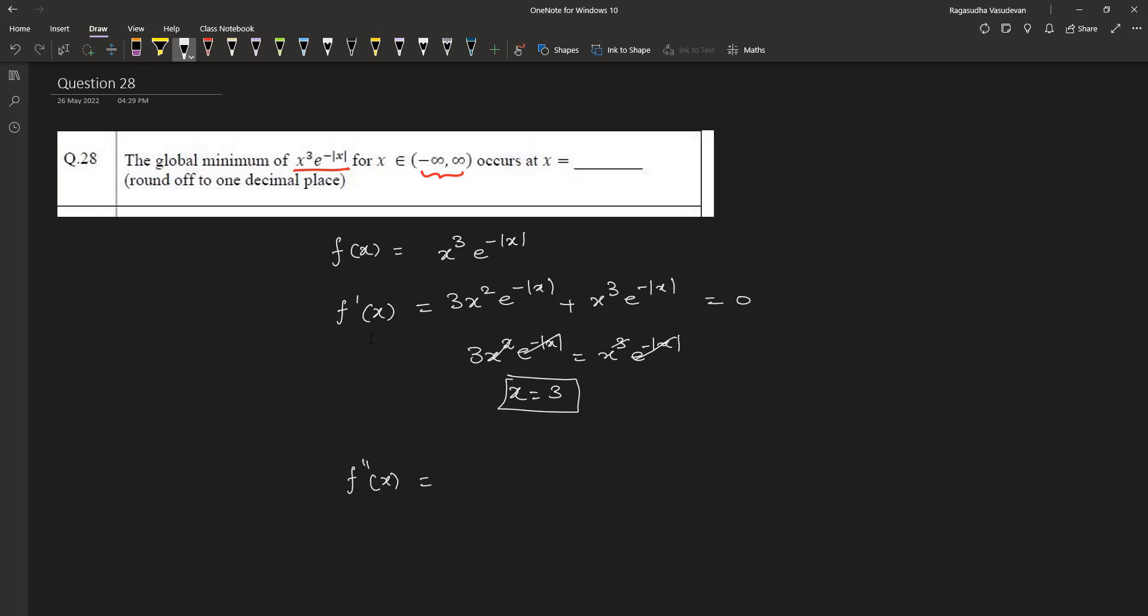The second derivative of this function is equal to 6x e to the power minus mod x plus 3x square e to the power minus mod x plus 3x square e to the power minus mod x plus x cube e to the power minus mod x. So, f double dash of 3 is equal to 18 e to the power minus 3 plus 3 into 9 e to the power minus 3 plus 3 into 9 e to the power minus 3 plus 27 e to the power minus 3.